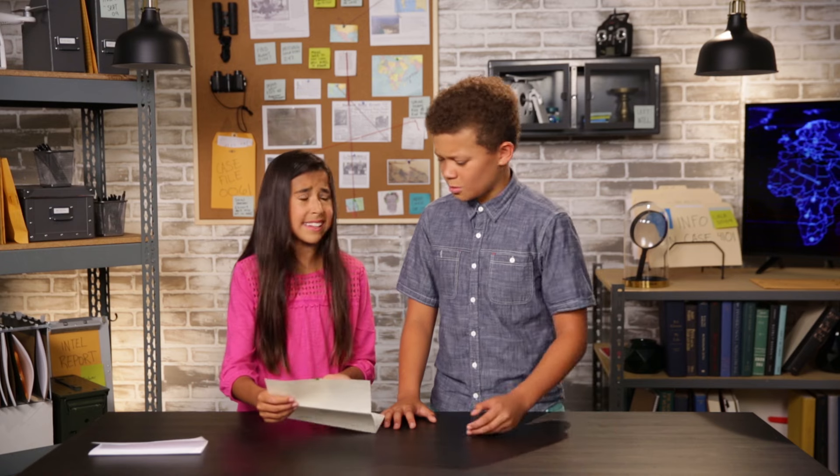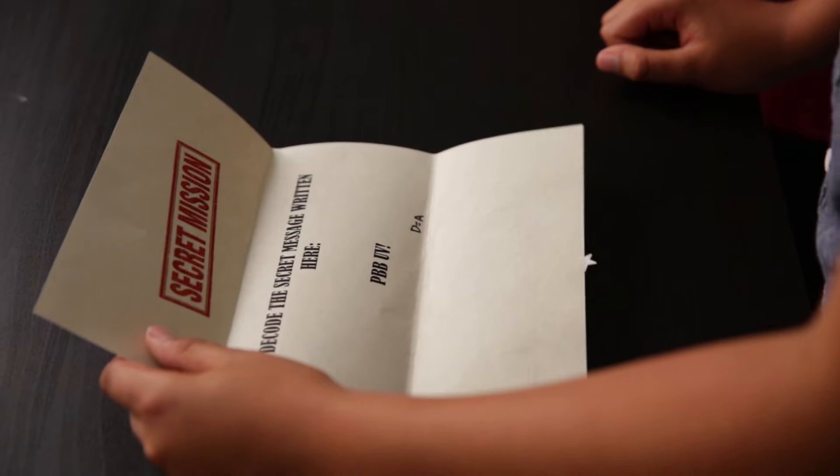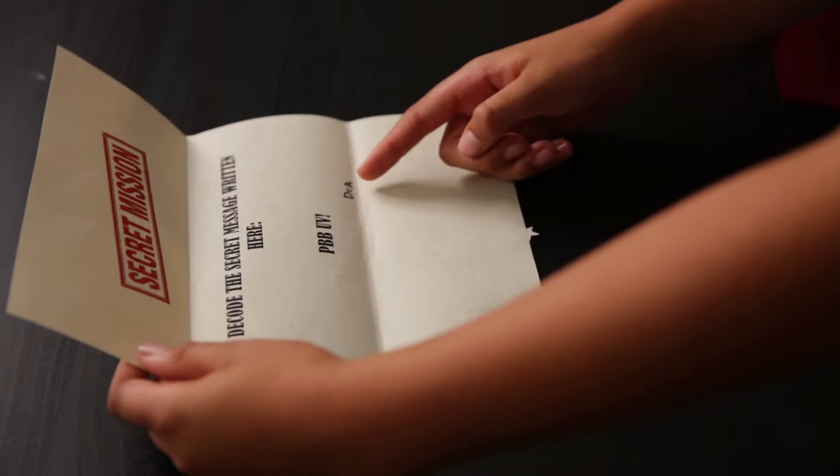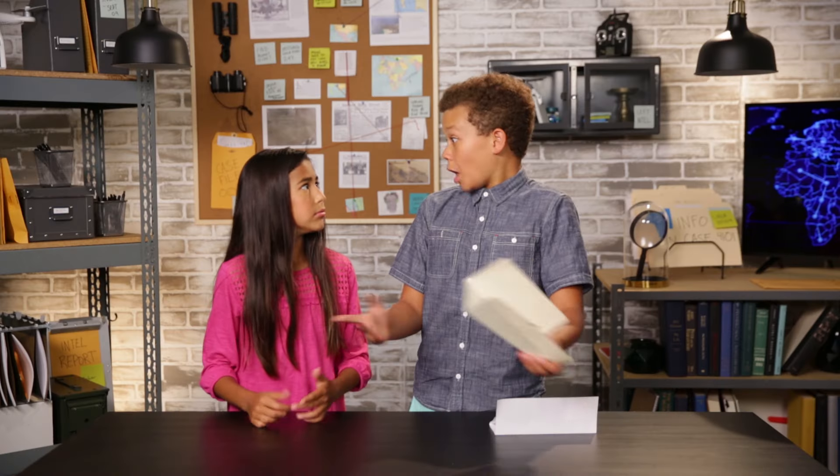The assignment is to decode these two secret messages, but this page is blank and this one doesn't make any sense. Wait, let me see this. Yeah, it's just a bunch of random letters and this one says D equals A. Well, maybe we have to make a spy gadget to help us decode these.